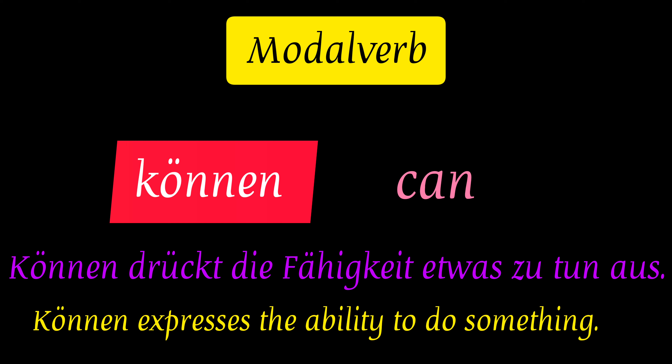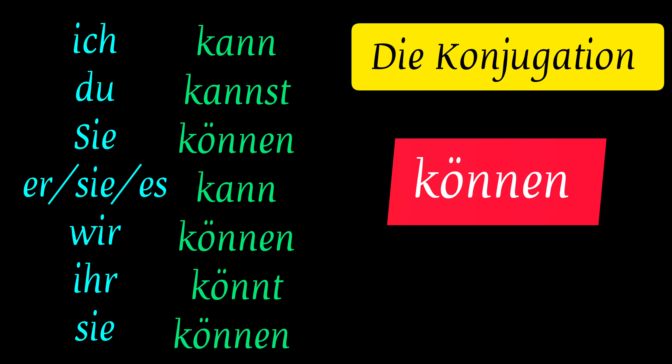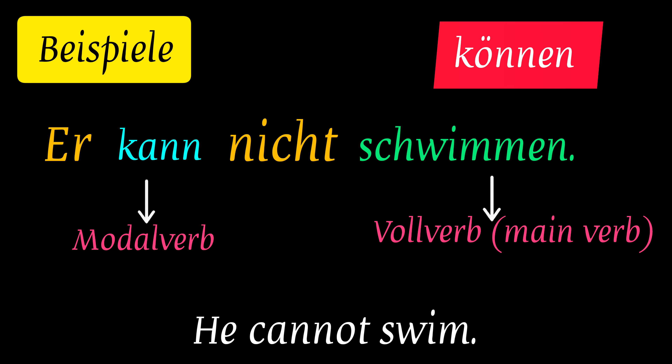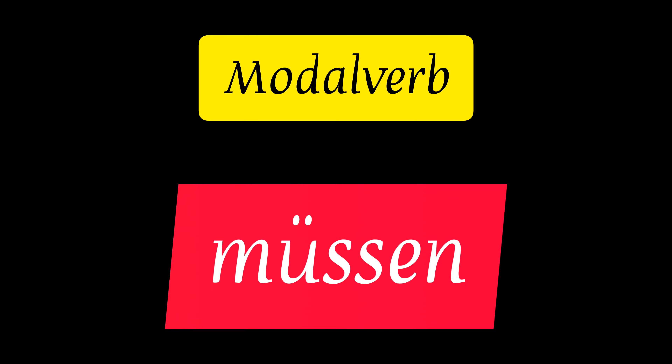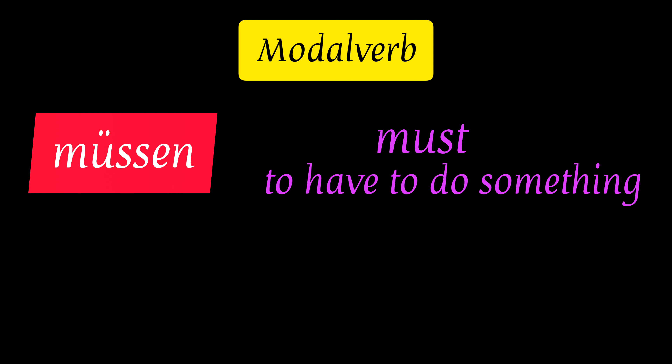The next modal verb is können, which means 'can' in English and expresses the ability to do something. Conjugation: ich kann, du kannst, Sie können, er/sie/es kann, wir können, ihr könnt, Sie können. Examples: 'Du kannst gut Deutsch sprechen' and 'Er kann nicht schwimmen.'